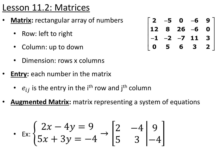An augmented matrix is a matrix that we use to represent a system of equations. Each row represents an equation, and each column represents the coefficients of one of your variables. For example, the equation 2x minus 4y equals 9 looks like 2, negative 4, with the vertical bar representing the equal sign, and then 9. And 5x plus 3y equals negative 4 becomes 5, 3, bar, negative 4. The first column represents the coefficients of x, the second column the coefficients of y, and the bar represents your equal sign with the constants on the right.